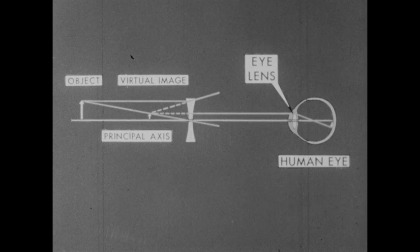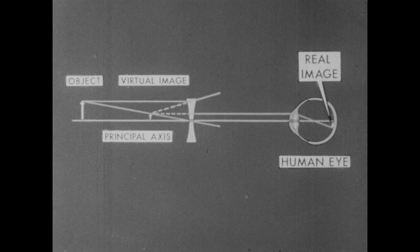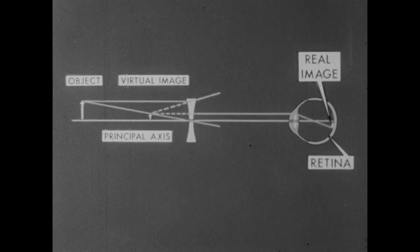Tracing the formation of an image of our object through the eye lens, we find that it does form a second real image, inverted and projected upon the retina, the receiving screen of the eye.